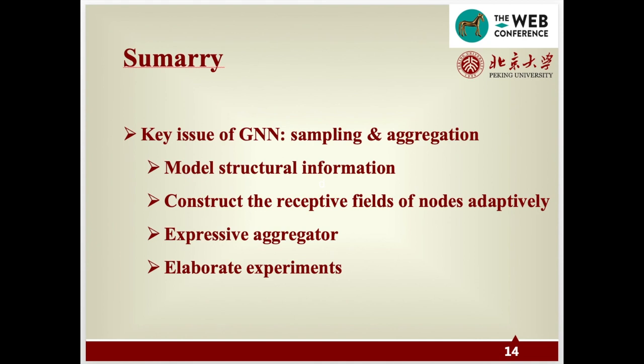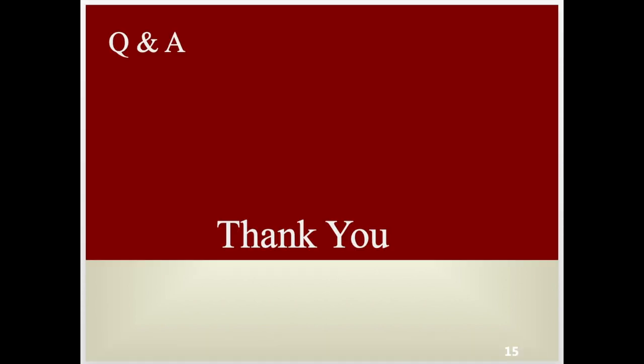To summarize, we tackle a key issue in the graph neural network field: sampling and aggregation of neighborhoods of nodes. We propose Star-GNN that collects and aggregates useful neighborhood information and generates node representations with stronger expressive capability. Finally, we conduct elaborate experiments to show the power of our model. Thank you. The above is my lecture on Improving Graph Neural Networks with Structural Adaptive Receptive Fields.